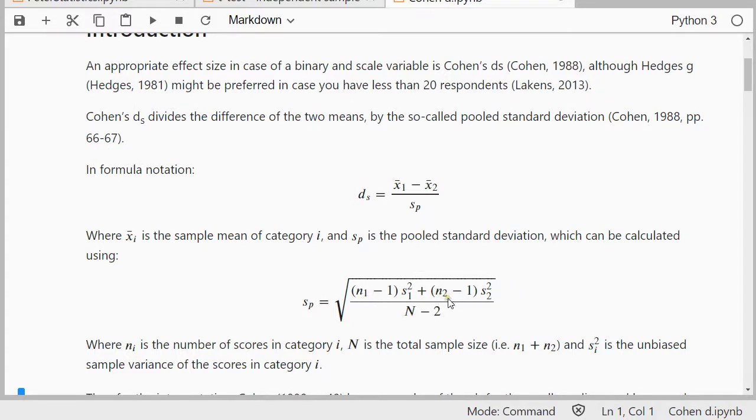That in itself has a scary looking formula with a big square root sign. Then there is the N1 and the N2, those are how many scores you have in the first category and how many in the second. And this S1 and S2 with a square means that those are the variances, the sample variances of the two respective categories. The big N is simply N1 plus N2, so the total sample size.